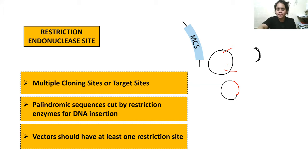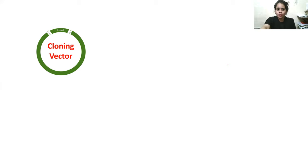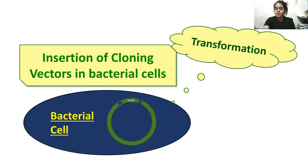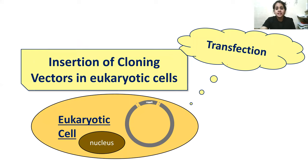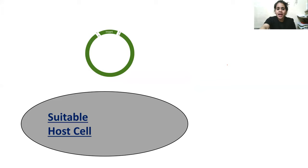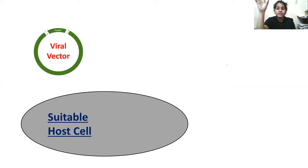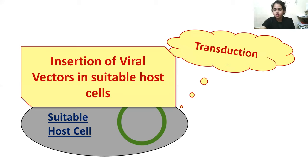Now, insertion of cloning vectors: when recombinant DNA is inserted into a bacterial cell, that is called transformation. Insertion of a cloning vector into a eukaryotic cell is called transfection. When a viral vector is put into a suitable host, that process is called transduction. So be clear: transformation is for bacterial cells, transfection is for eukaryotic cells, and transduction involves viral vectors.